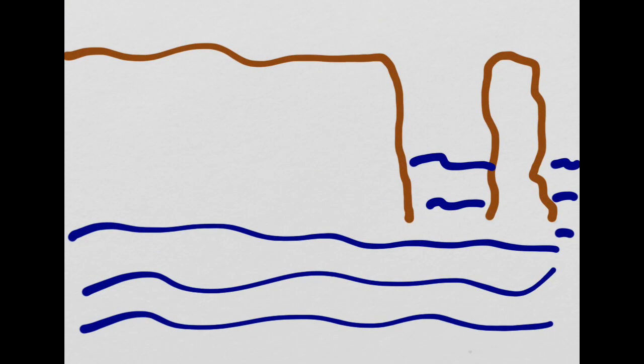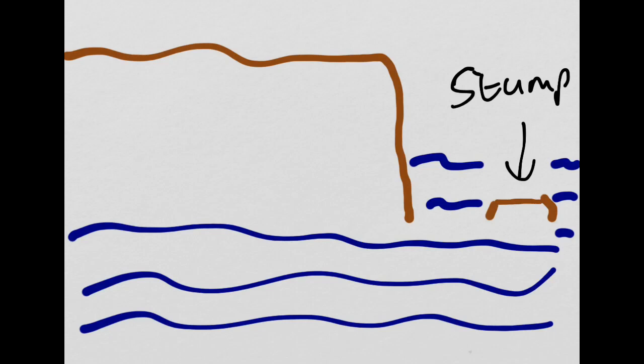What eventually happens then over time is that as the base of the stack starts to get thinner, the whole stack itself will collapse into the sea. We're then left with what we term a stump. The stump may only be visible at low water and at high tide it could well be not visible from the top of the headland here.